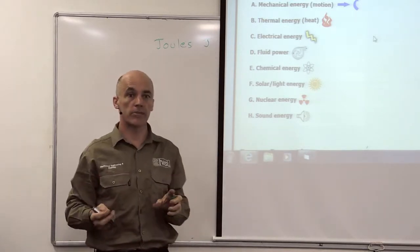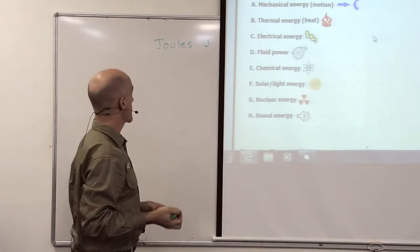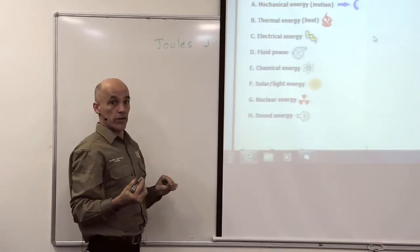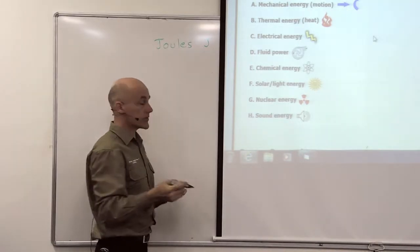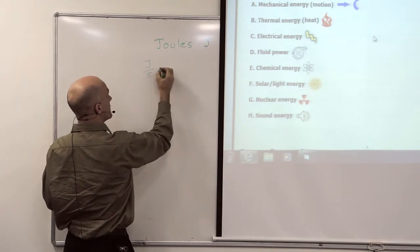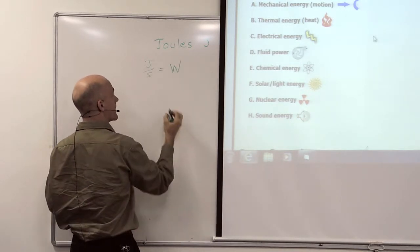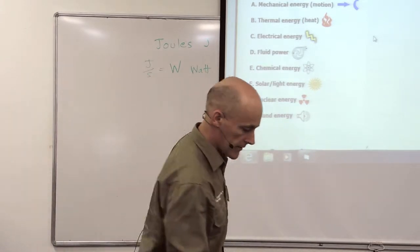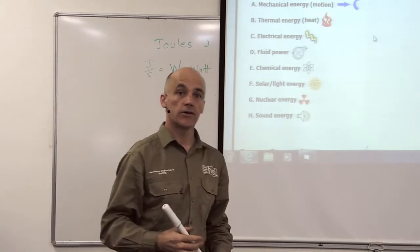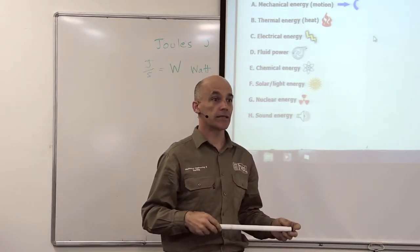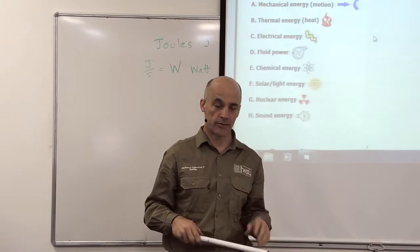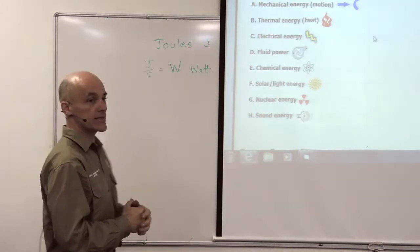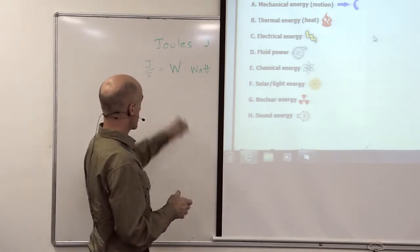When we divide joules and want to know the joules per second, how much energy per second, then a joule per second is a watt, which is named after James Watt, the steam engine guy. As a matter of fact, he's the guy that invented the horsepower. Once we got rid of horsepower, we decided to call our replacement, the kilowatt, we decided to call it Watts.